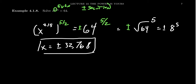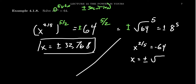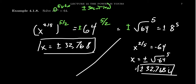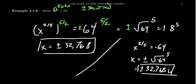Another issue arises if we had x to the two-fifths equals negative 64. When we raise both sides to the five-halves power, we get x equals plus or minus the square root of negative 64 to the fifth, which gives an imaginary number. So the two solutions would be plus or minus 32,768i. If we want real solutions only, there's no solution; if we allow complex solutions, those are the answers. When the numerator is even, some tricky things happen — treat even numerators with caution.